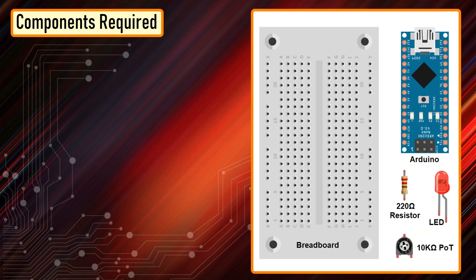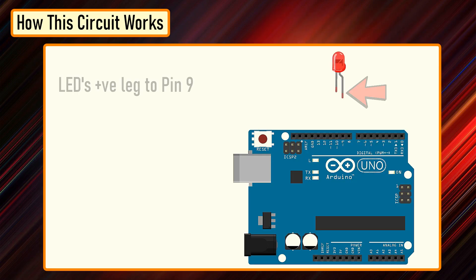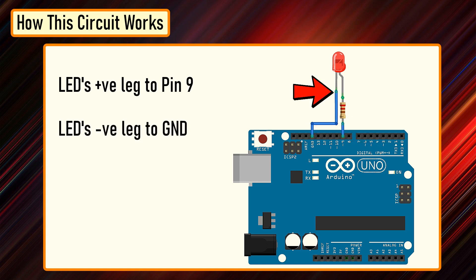For this setup we need an Arduino Uno, Nano, whatever is handy, a breadboard, a LED, a 220 ohm resistor, and a 10k potentiometer. Connect the positive leg of your LED to the digital output pin number 9 of Arduino through a 220 ohm resistor. Connect the negative leg directly to the ground. That's it. That's how simple it is.